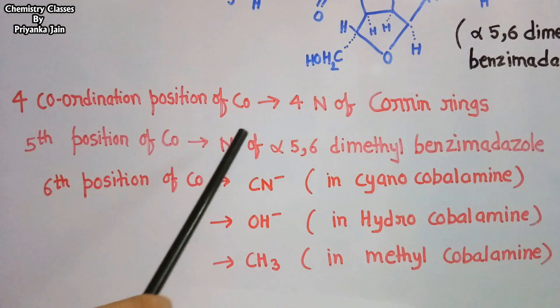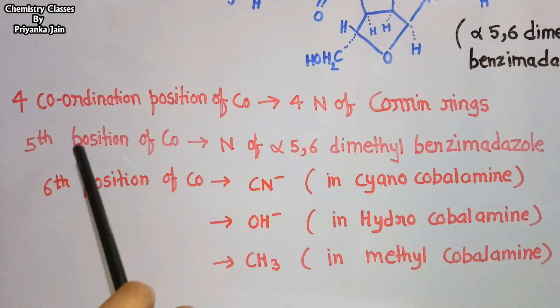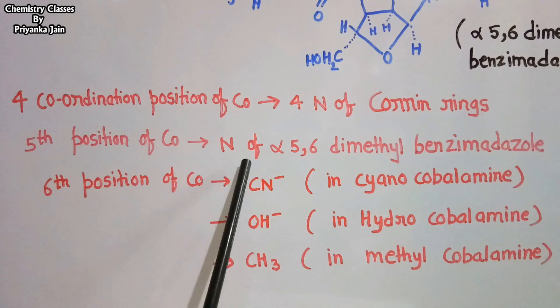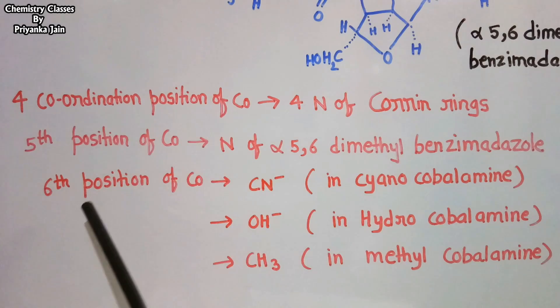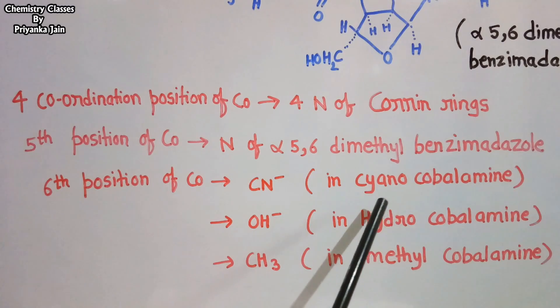The four coordination positions of cobalt are occupied by four nitrogens of the corin rings. The fifth coordination position of cobalt is occupied by the nitrogen of alpha-5,6-dimethylbenzimidazole. And the sixth position of cobalt, which is vacant in natural vitamin B12, is occupied by cyanide in cyanocobalamine, by hydroxyl group in hydroxycobalamine, and by methyl group in methylcobalamine.